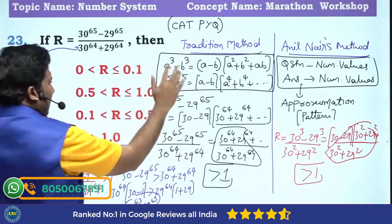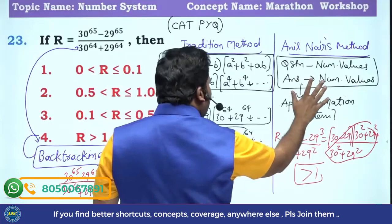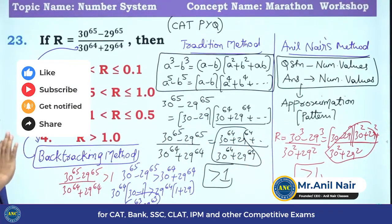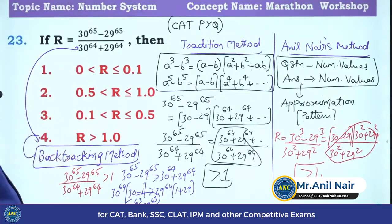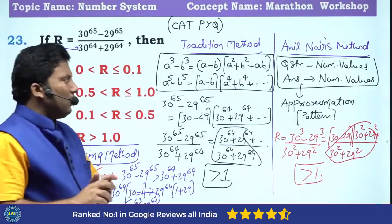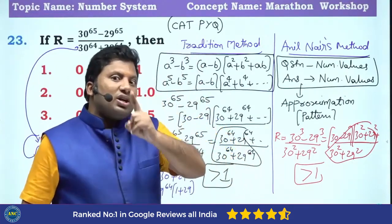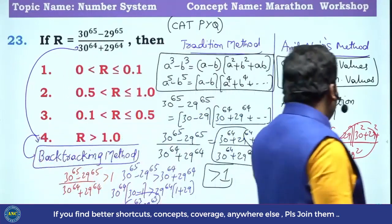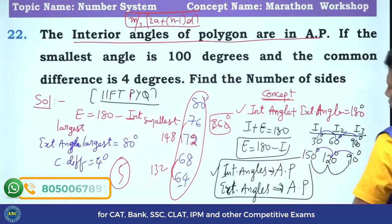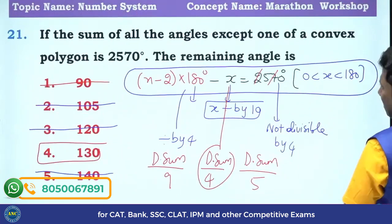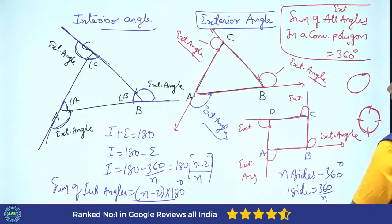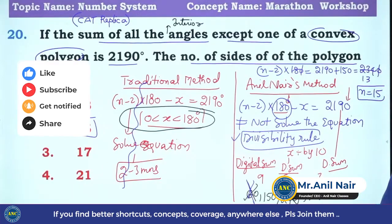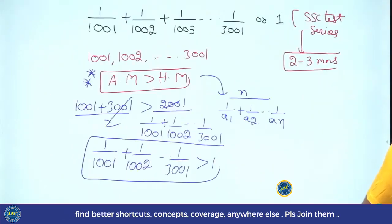So one is the traditional method, one is Anil Nair's method, and another is the backtracking method to solve the question. I hope the logic is crystal clear. I am taking original exam questions — CAT previous year questions — to give you a different dimension to your thought process, including understanding definitions of interior, exterior, convex, concave, and so on.